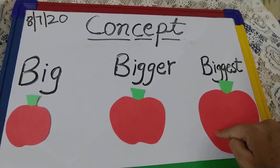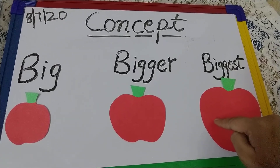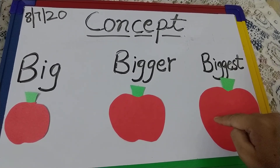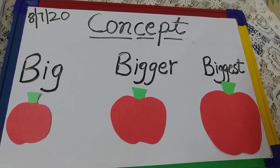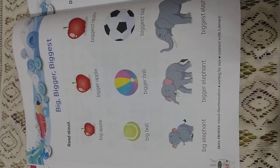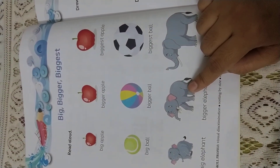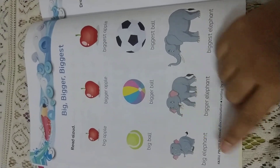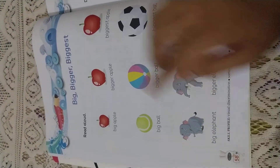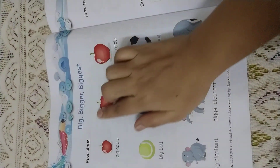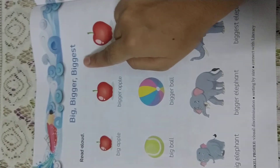So children, did you understand the concept of big, bigger and the biggest? Very good. So children, in our math book you can see page number 58. There is the concept of big, bigger and the biggest.